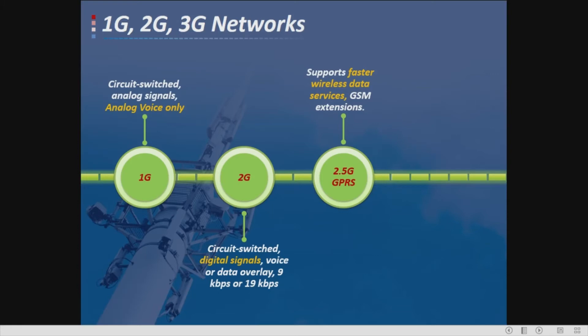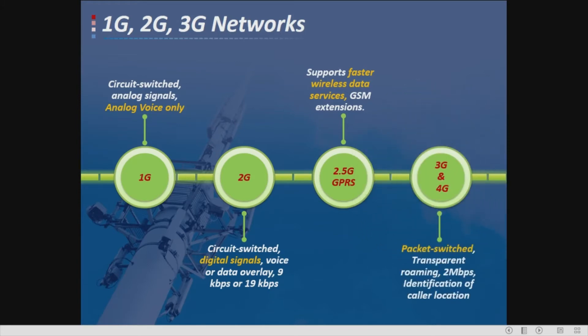These upgrades make the speed faster. Moving on to 3G and 4G systems — unlike the previous generations that used circuit switching, 3G and 4G use packet switching. They support transparent roaming at 2 megabits per second and include identification of caller location.